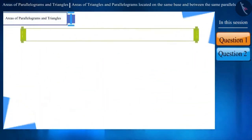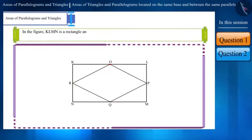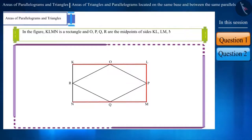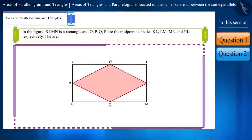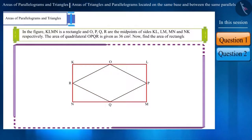Let us now look at a question. In the figure, KLMN is a rectangle and O, P, Q, R are the midpoints of sides KL, LM, MN and NK respectively. The area of quadrilateral OPQR is given as 36 cm². Find the area of rectangle KLMN.